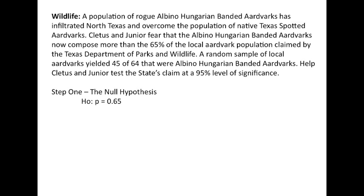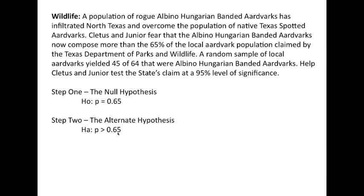Step one: the null hypothesis. The null hypothesis is the claim. The Parks and Wildlife Department here in Texas claims that 65% of the local aardvark population are albino-Hungarian banded aardvarks, so H0: p equals 65%. The alternate hypothesis is what Cletus and Jr. fear — that the true proportion is actually greater than 65%.